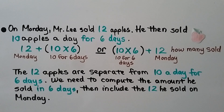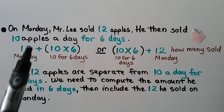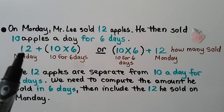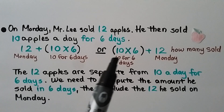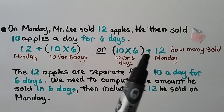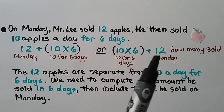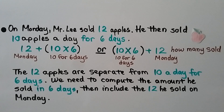On Monday, Mr. Lee sold 12 apples. He then sold 10 apples a day for 6 days. The 10 apples a day for 6 days is 10 times 6, and we add the 12 he sold on Monday. We could write (10 times 6) plus 12. The 12 apples are separate from the 10 a day for 6 days. We need to compute the amount he sold in 6 days first, then include the 12 he sold on Monday.